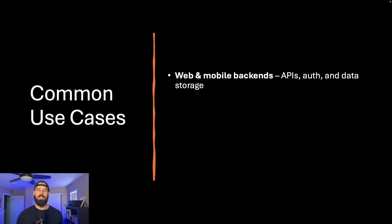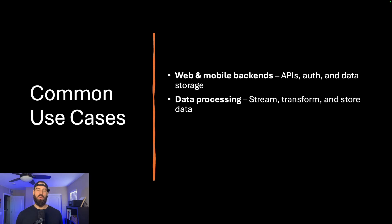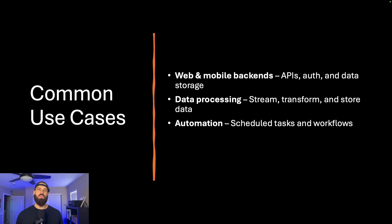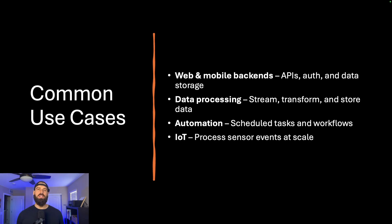Serverless powers many real-world applications. It's perfect for back-end APIs that power web and mobile applications — use API Gateway to handle HTTP requests, Cognito for user authentication, and DynamoDB or Aurora Serverless for storage. It's scalable and cost-efficient, especially for apps with unpredictable traffic patterns. Serverless also shines in data workflows, whether real-time stream processing or periodic batch jobs. You can use Kinesis or S3 events to filter, transform, or enrich data before storing it in a database or data warehouse. Serverless is great for scheduled jobs using EventBridge — examples include nightly data syncs, cleanup tasks, sending reminder emails, or running DevOps automation. In IoT scenarios, devices often send frequent small payloads; serverless functions can process these on demand using IoT Core and Lambda to create highly scalable, cost-effective pipelines for sensor data.